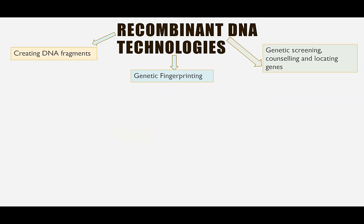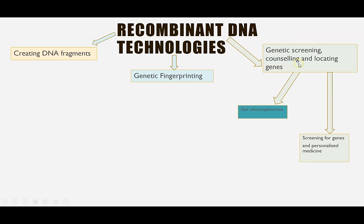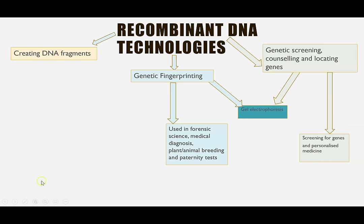Just an overview of where this fits into the A-Level topic. Topic 8 for AQA, which is part of gene technology, has three key sections: creating the DNA fragments, genetic fingerprinting and genetic screening, counselling and locating genes. This section covers gel electrophoresis to screen and identify if someone has particular genes, counselling and personalised medicines, and genetic fingerprinting — used in forensic science, medical diagnosis, plant and animal breeding, and genetic testing such as paternity tests.